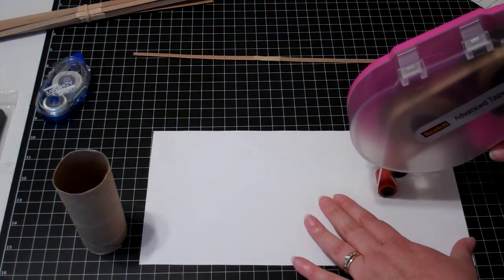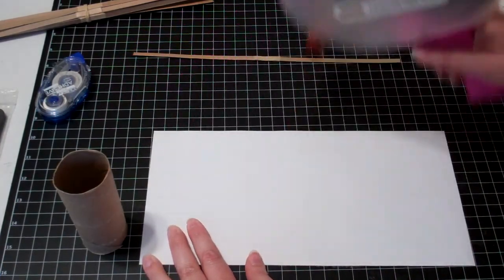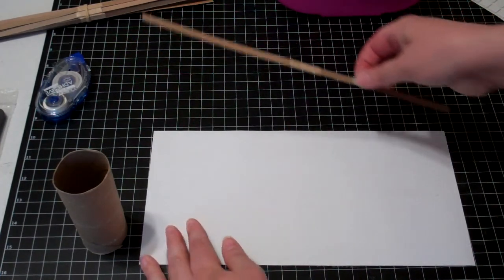And then I'm also going to run just a little stripe out towards the sides, on each side, to adhere our cracker.